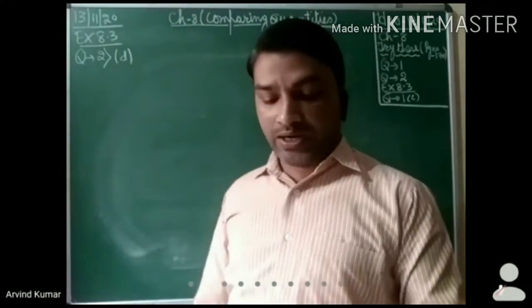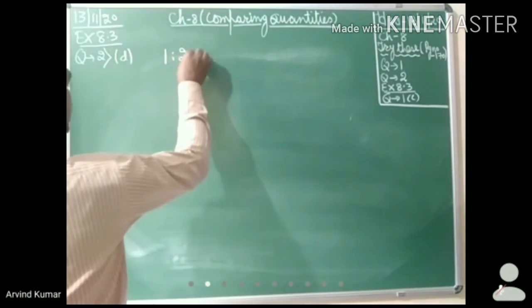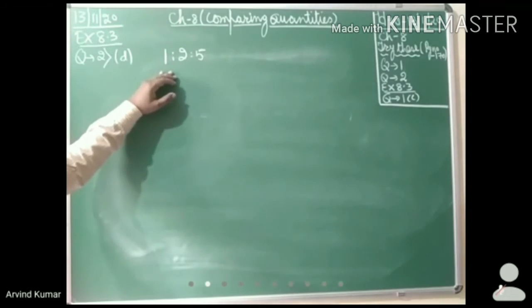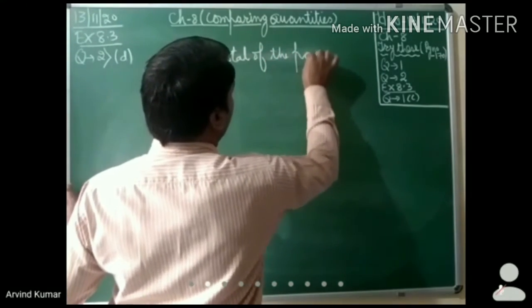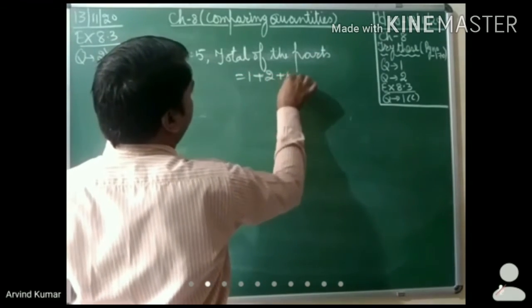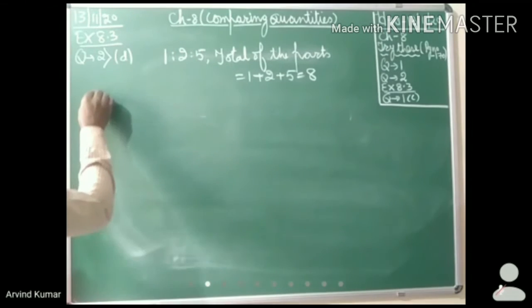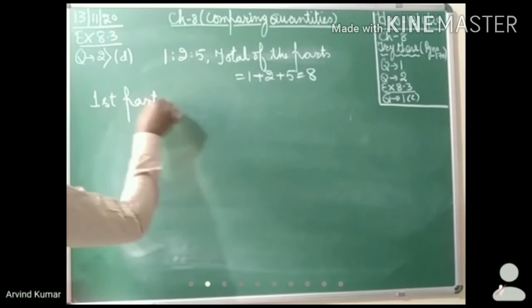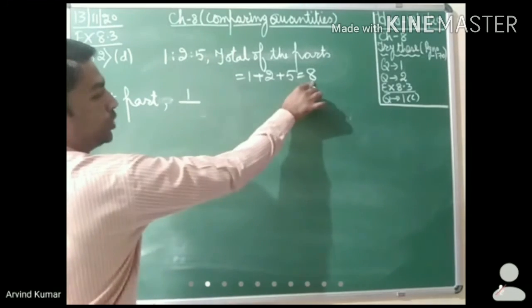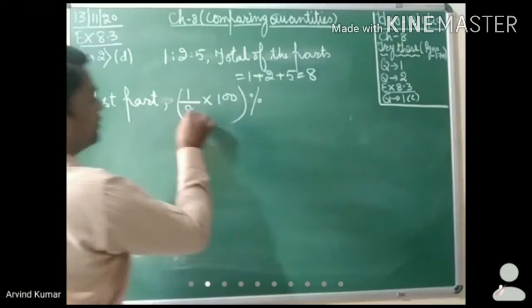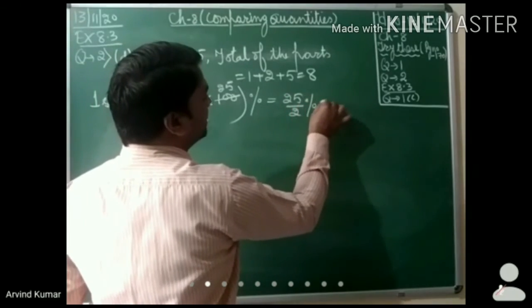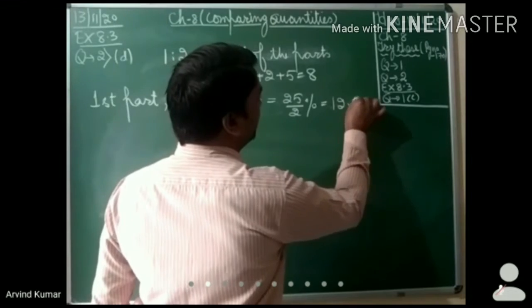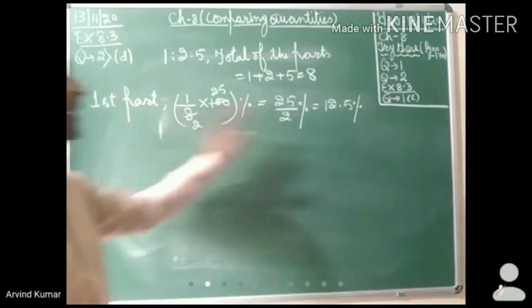Next is question number 2 D part: Convert each part of the ratio to percentage. The ratio given is 1 is to 2 is to 5, and we have to convert each part to percentage. First, find the total of the parts: 1 + 2 + 5 = 8. Percentage of first part = 1 over 8 multiplied by 100 = 25 over 2 percent, which can also be written as 12.5 percent. Therefore, percentage of first part is 12.5 percent.